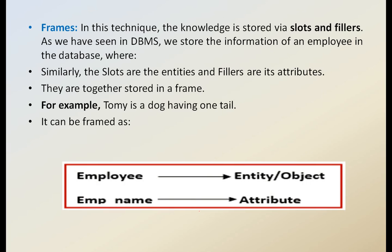All slot filler structures are used to store knowledge. Slots are the attributes, and fillers are the associated values for those attributes. This data is stored in the form of slots and fillers — similar to how data is stored in a database in DBMS. For example, Tommy is a dog with one tail. Another example: employee is the entity, EMP name is an attribute.